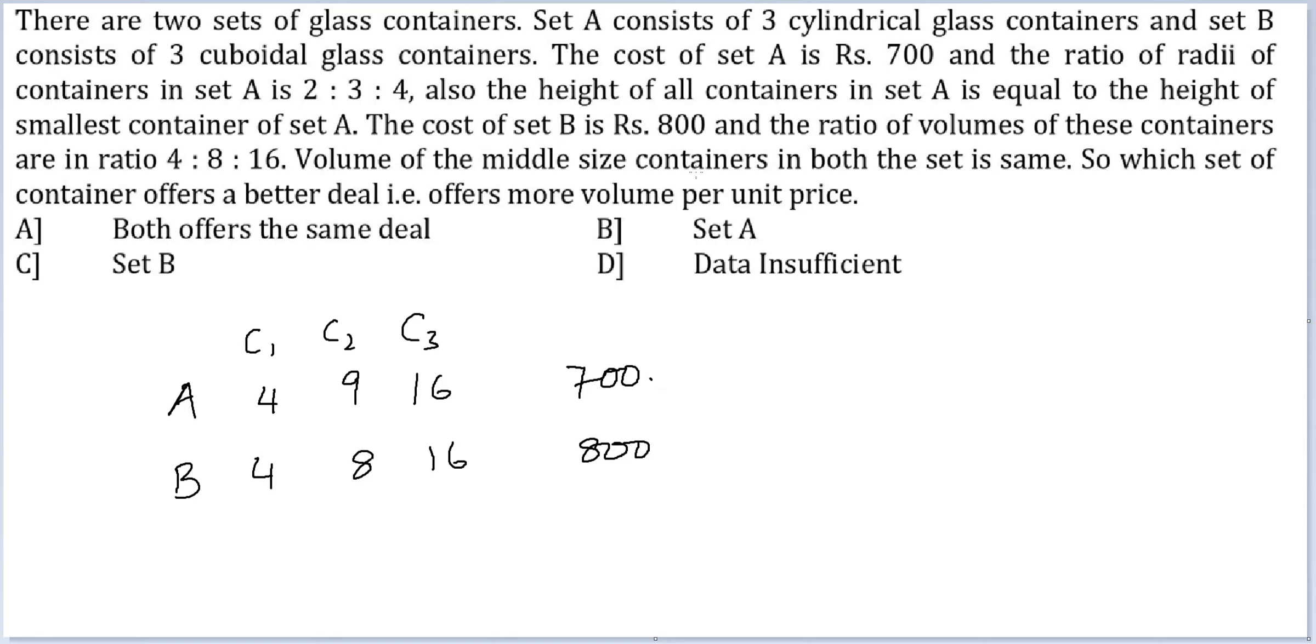Volume of the middle-sized containers in both sets is the same. So which set of containers offers a better deal? That is, offers more volume per unit price.